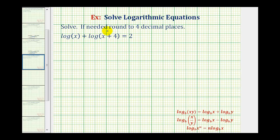We want to solve the given log equation, and if needed, round to four decimal places. Notice how in this equation, the two logarithms don't have the base listed, which means these are common log, or log base 10.